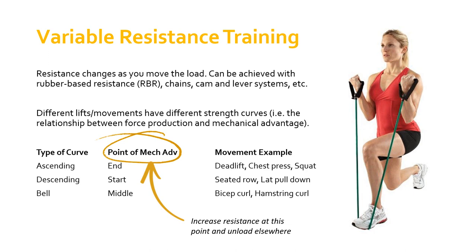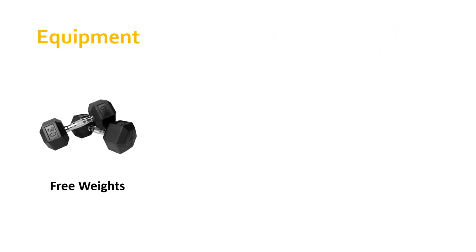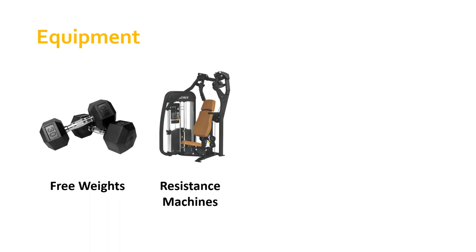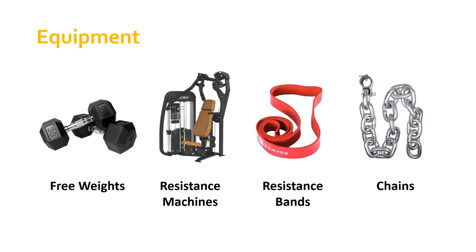One last note on this type of training: variable resistance training — particularly rubber-based resistance training — is really useful for strength training in planes other than the sagittal plane, meaning non-gravity-dependent movements. You can basically attach a rubber band pretty much anywhere — above you, to the side — so you can work on strength in a plane other than what's gravity-dependent. In terms of equipment for strength training, the most obvious would be free weights, but to adapt things for variable resistance you might look at resistance machines, resistance bands, chains, and so on.